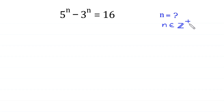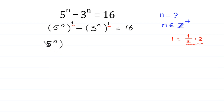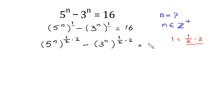Let's start. 5 to the power n can be written as (5 to the power n) to the power 1, and 3 to the power n can be written as (3 to the power n) to the power 1, equal to 16. Now 1 is equal to 1 over 2 times 2, so we replace this 1 and this 1 with 1 over 2 times 2.